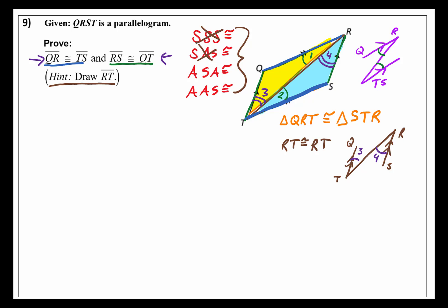So we have two pairs of congruent angles and the included side RT between those two angle pairs. That gives us three pieces of information, and it looks like we'll be using angle-side-angle congruence. Now that we have an idea, we can start writing the formal proof.